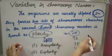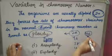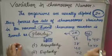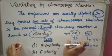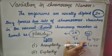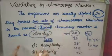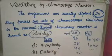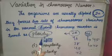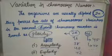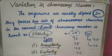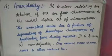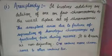Humans usually have 46 chromosomes. Any variation — whether 45, 47, or otherwise — is termed as variation in chromosome number. There are two types of variation in chromosome number: aneuploidy and euploidy. Let's see the details of each.